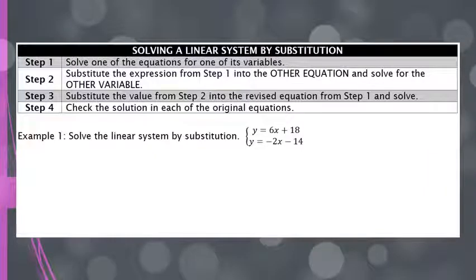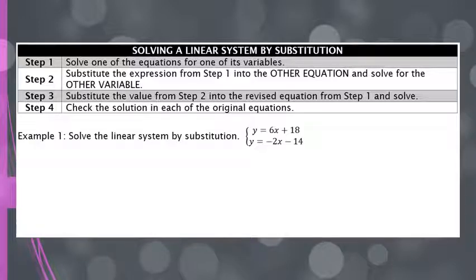The first step to solving a linear system by substitution is to make sure that you have at least one of your equations solved for a variable. If you look at the equations here, they're both solved for y. So this is why the system is a good fit for substitution — I don't have to do step one because it's already done.